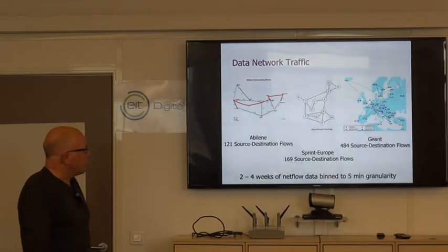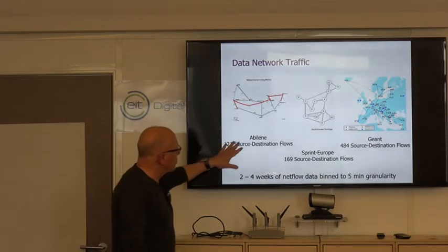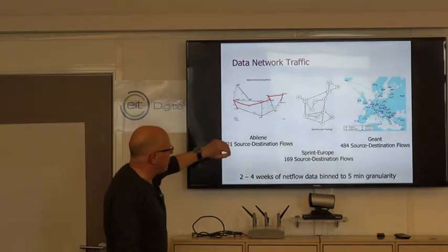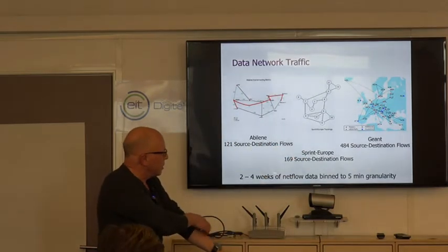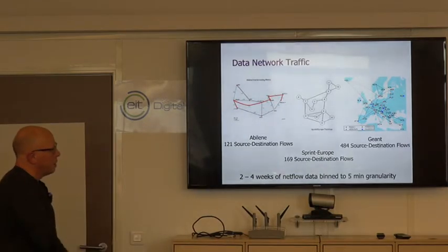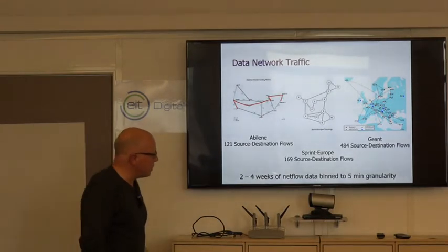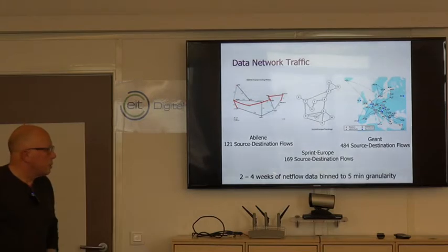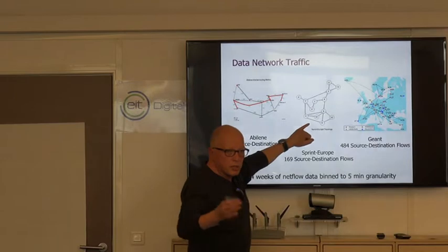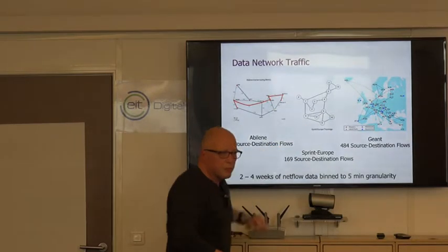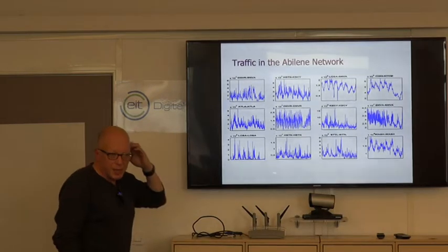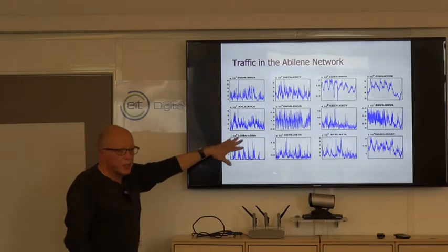So the first thing we'll talk about is applying this to data network traffic. We have network traffic from a couple of different networks. One is from the Abilene network, the research backbone in the U.S. And one is from Sprint in Europe. And one is from GEANT, which was the research backbone for networks in Europe. We were able to collect NetFlow data from each of these networks, binned at five minutes. Each link gives us a time series in which each value is the number of bytes that flowed over five minutes over that link.